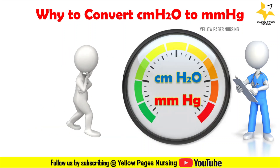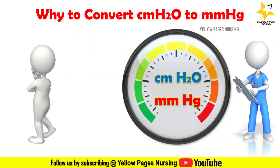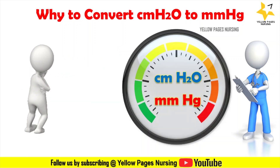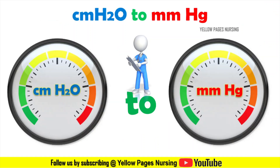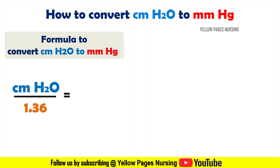First comes the conversion of centimeter H2O to mmHg. The formula is: centimeter H2O divided by 1.36, which gives the value in mmHg.